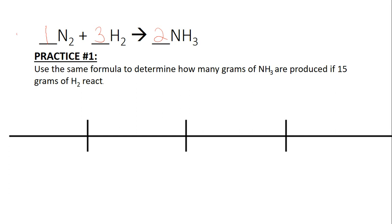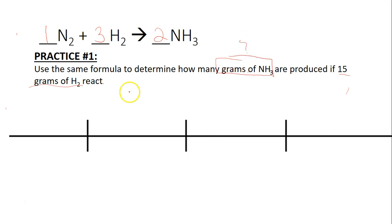Now that we have that balanced, what we're going to do is calculate what we're looking for in this problem. 15 grams of H2 is my given, and we're trying to solve for grams of NH3. The first thing we're going to do is write our given, which is 15 grams of H2.